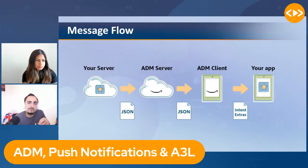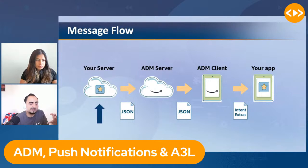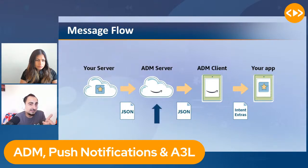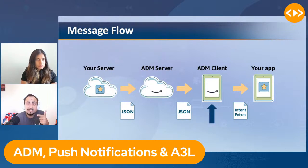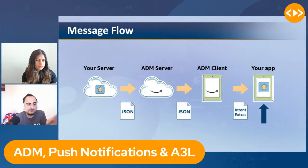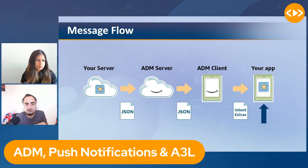The message flow supported by ADM works like this: your server connects and logs in with the ADM servers to send the message. The ADM server manages connections with the client and sends the message. Then the ADM client — the part of the ADM SDK running inside your device — receives the message and passes it to your app. So there are four components, but you only control two: your server and your app. You don't need to think about the configuration of all the other stuff.